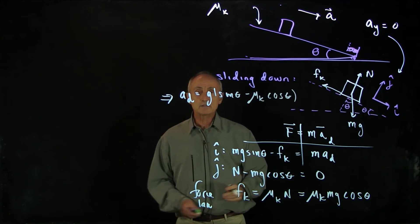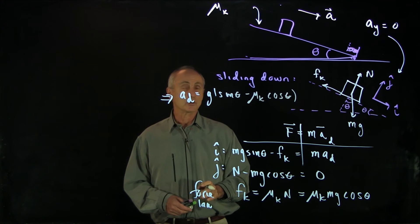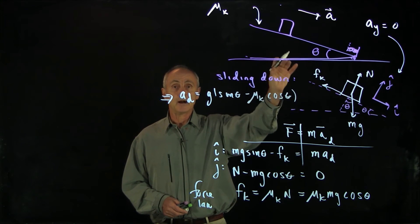What I get is that the acceleration going down is just equal to g times sine theta minus mu k cosine theta. That's how we can analyze the acceleration when the block is sliding down.